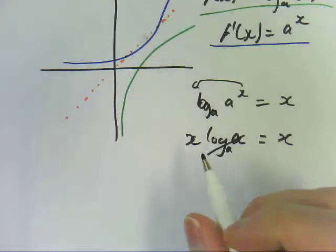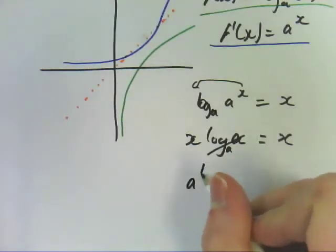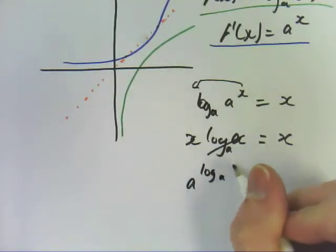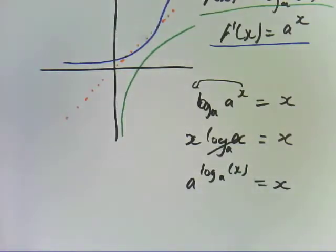You've also got a to the log_a(x) also equals x, because this and this cancel each other out. These are inverse functions. So like you divide to undo a multiplication, to undo a log, you put it to the power. So if you're trying to find log_a of x, you can just put the whole lot to the power of the base.